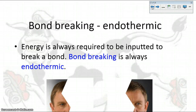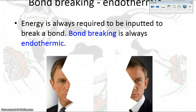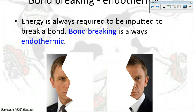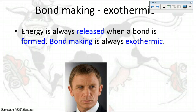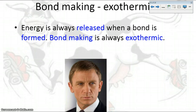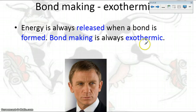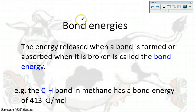Bond breaking is an endothermic process — you always have to put energy in to break a bond because you are taking it to a less stable state. Bond making, on the other hand, always releases energy. What determines if a reaction is endo- or exothermic is the difference between the energy needed to break the bonds and the energy produced when bonds are made. If that difference is positive, it's endothermic; if negative, the process is exothermic.